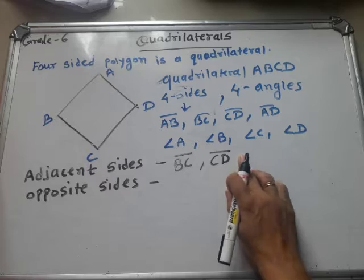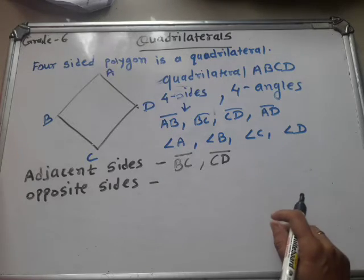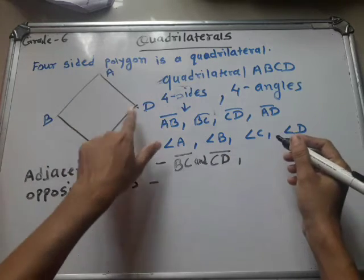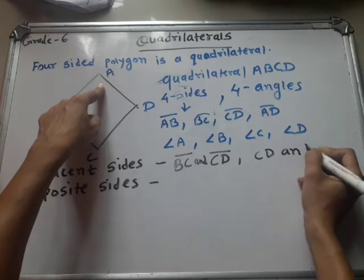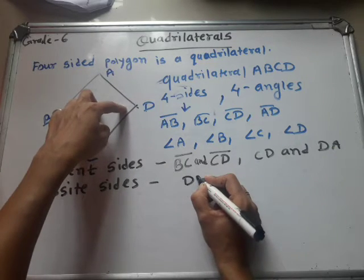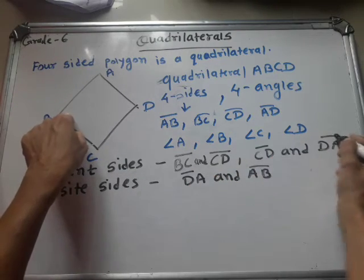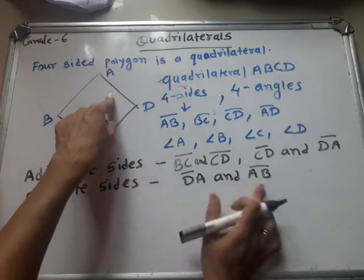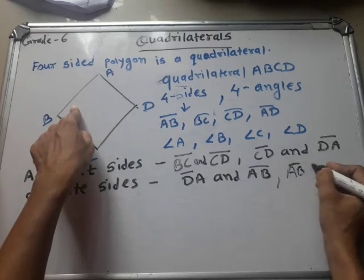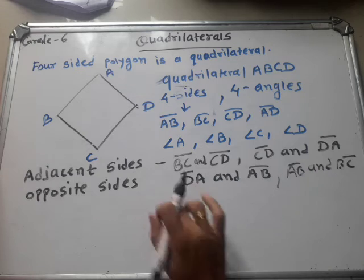Which are again two adjacent sides? CD and DA — these two sides are adjacent to each other. Then DA and AB. Here point A is common — these are called adjacent sides. And AB and BC — here point B is common — these are also called adjacent sides. They are neighbors; the side next to it is the adjacent side.